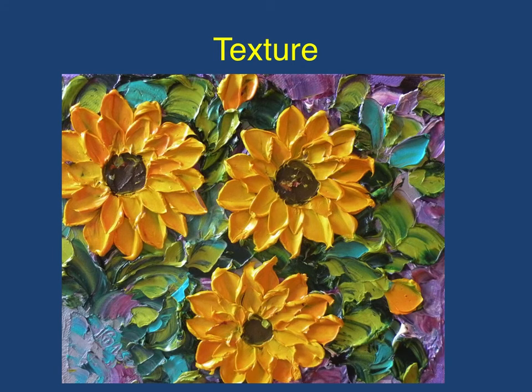The next element we're going to explore is what's called texture. Texture is a work's apparent roughness or smoothness. This may range from glossy to what's called impasto, which is what you see in this work. Impasto is a painting technique wherein an artist applies pigment very thickly to a work with a palette knife. You can see here, if you look at the petals on the flowers, how thickly the paint was applied — not with a paintbrush, but with a palette knife. This creates an actual physical texture. If you ran your hands along this canvas, you would feel the lumps and bumps of the paint.